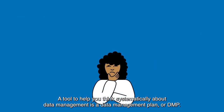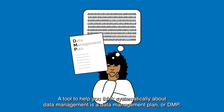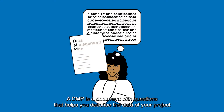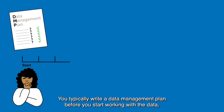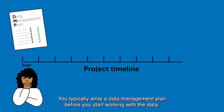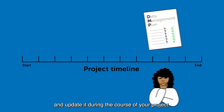A tool to help you think systematically about data management is a Data Management Plan, or DMP. A DMP is a document with questions that helps you describe the data of your project and how you will work with this data. You typically write a Data Management Plan before you start working with the data and update it during the course of your project.